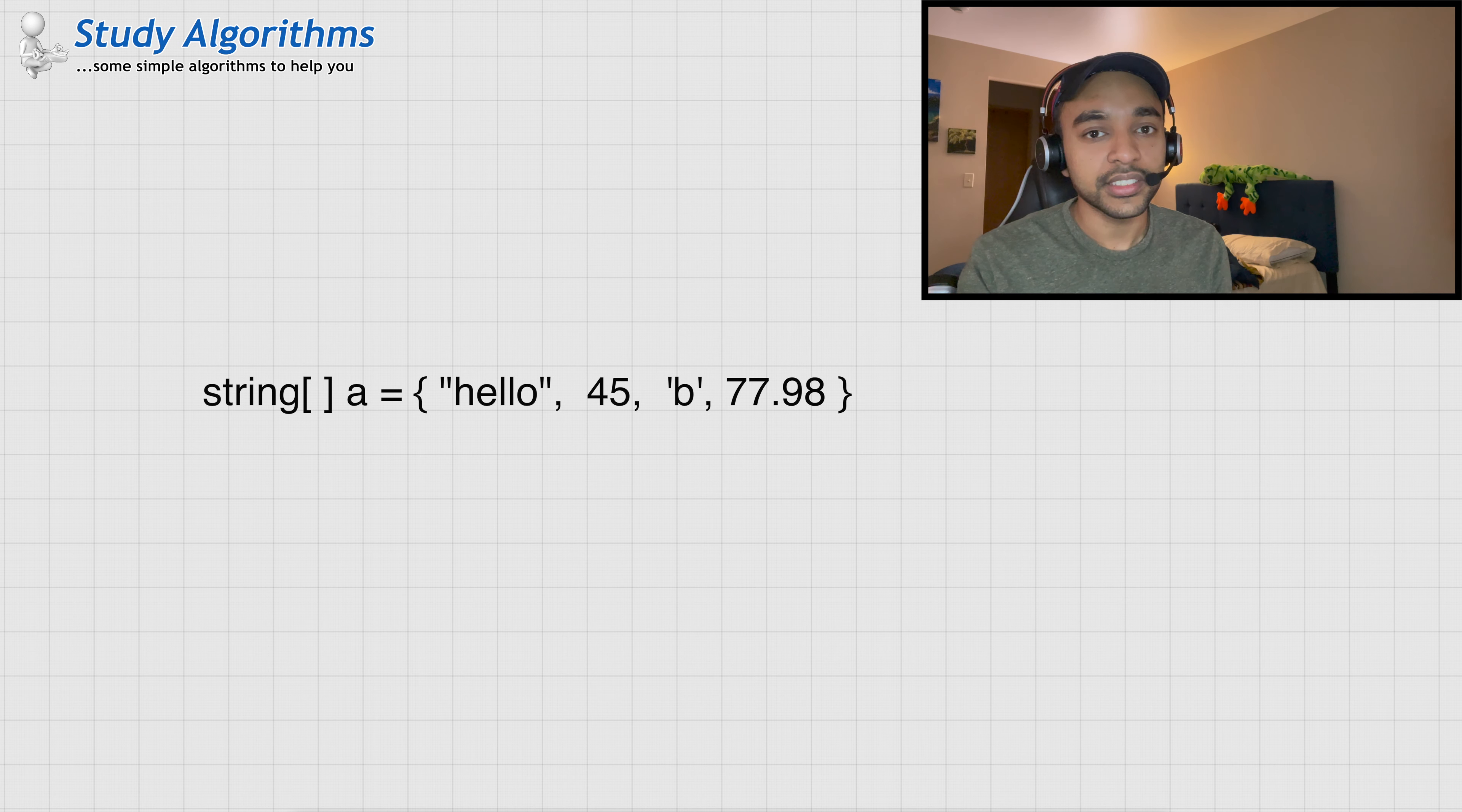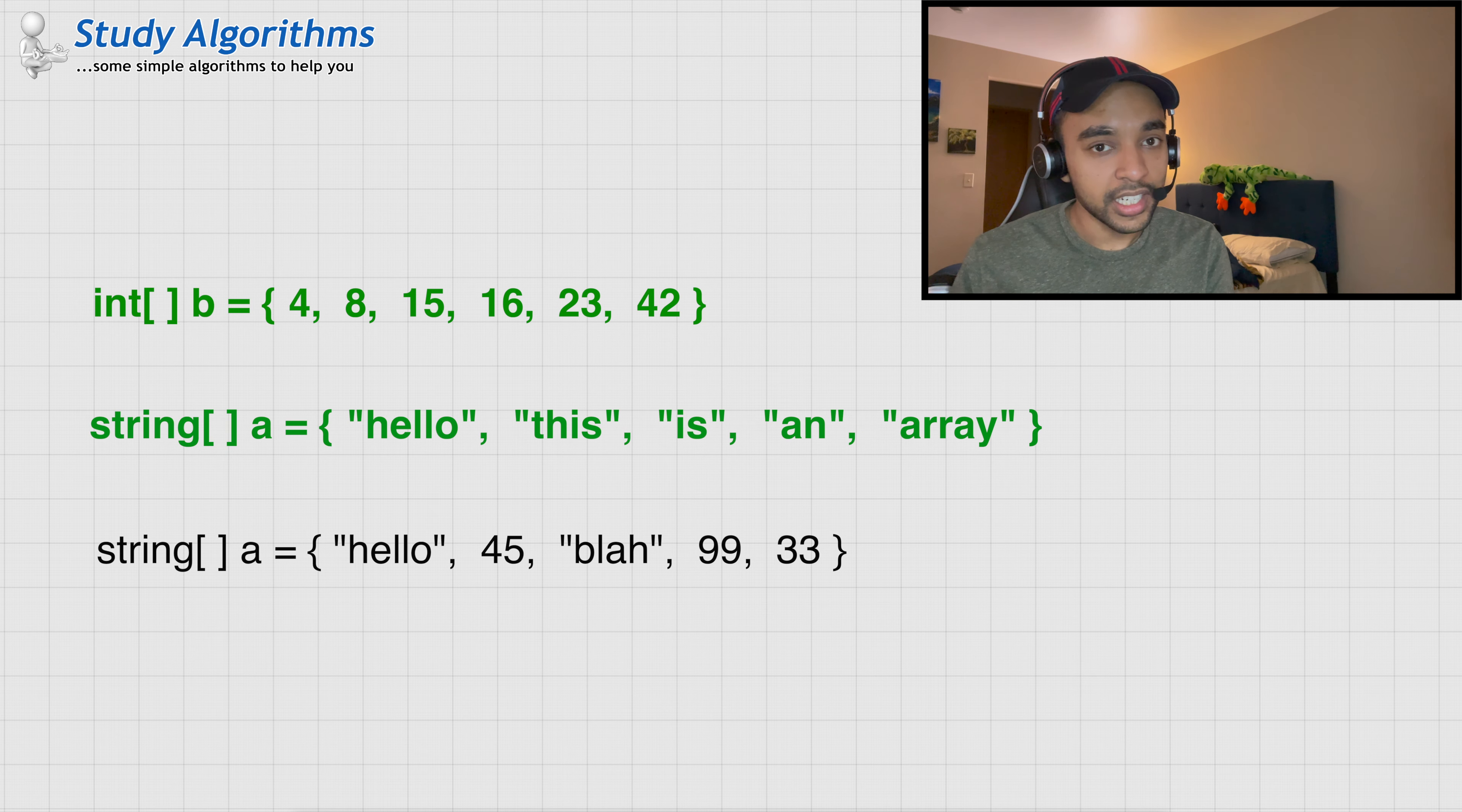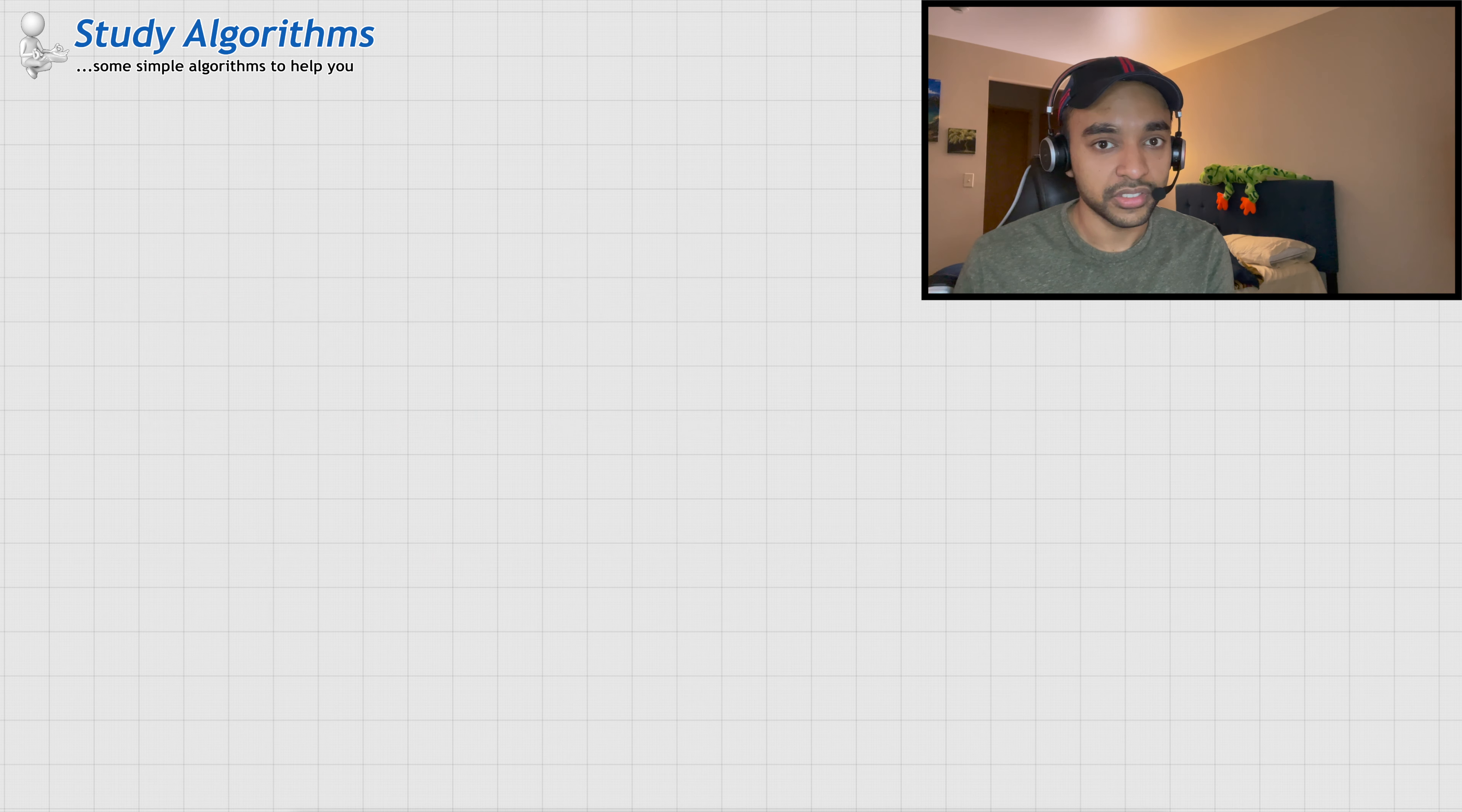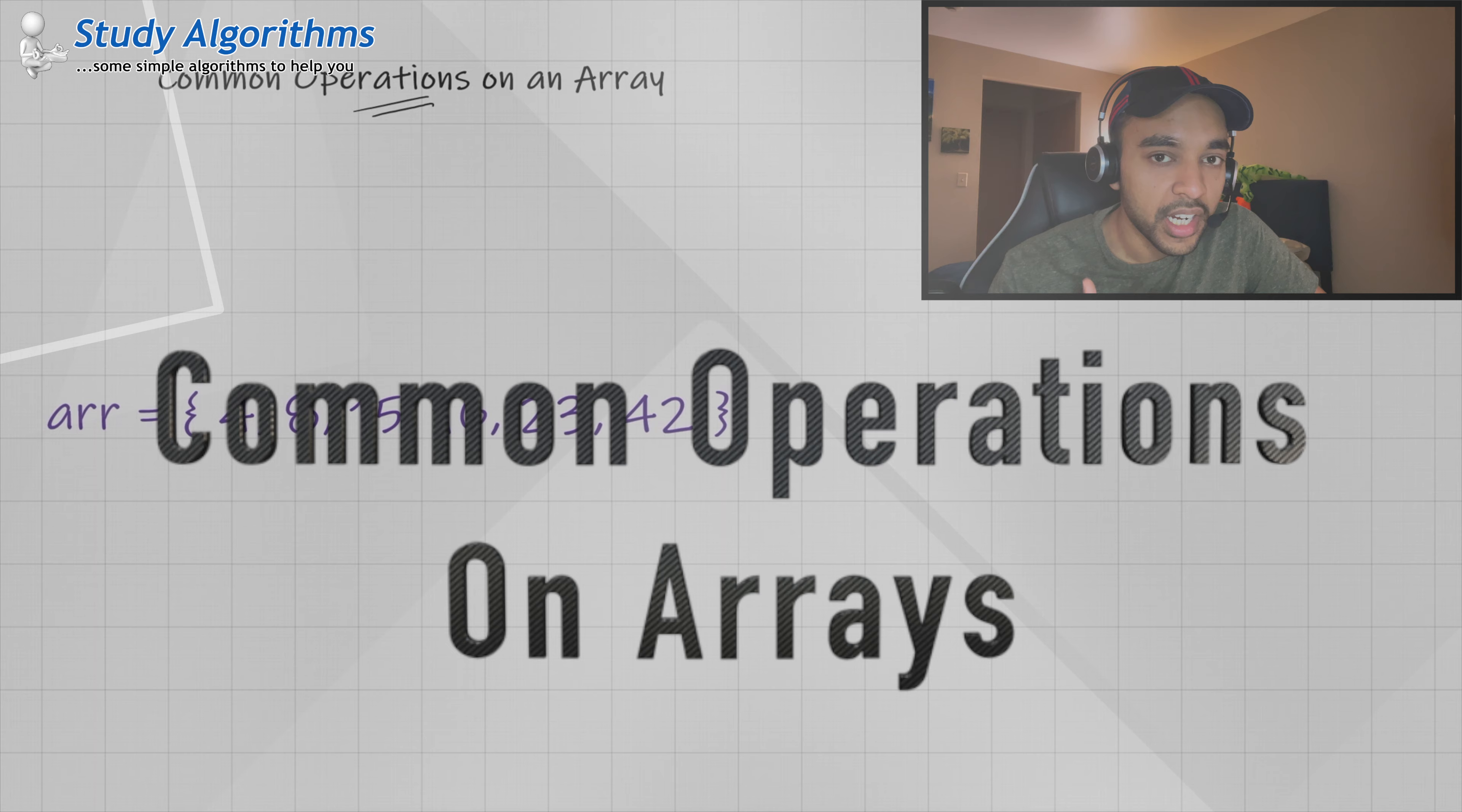So, as you can see, example one is valid. Example two is valid. It has all the strings. But example three is not valid. Some of the elements are string and some of the elements are integers. Now, let us try to see some of the common operations you can perform on an array.